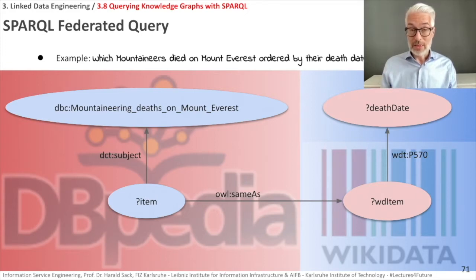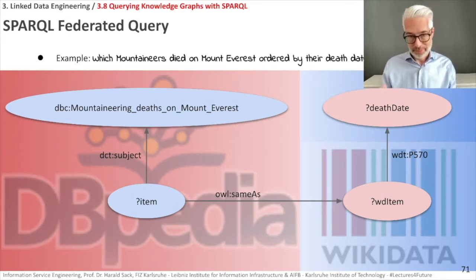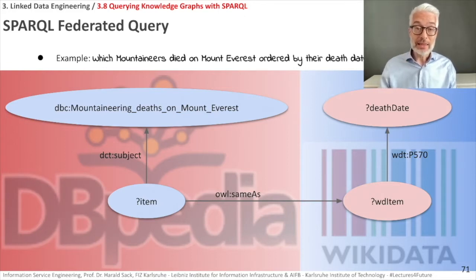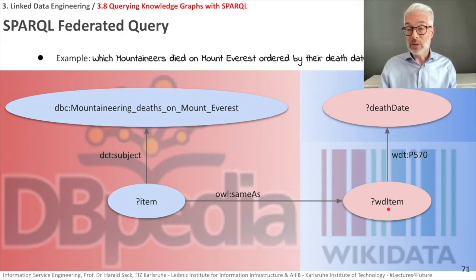The example query is: which mountaineers died on Mount Everest, ordered by the death date. I admit this is a bit macabre, but it works. There is a category in Wikipedia — and therefore also in DBpedia — called 'mountaineering deaths on Mount Everest'. We look for all items with that subject, then connect them to their corresponding items in Wikidata via owl:sameAs, and retrieve the death date via property WDT P570.